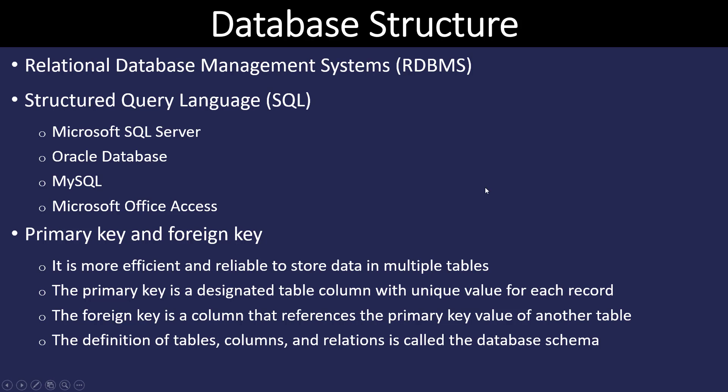One of the key features of a relational database is the primary and foreign key. Each record in a table has to be unique, and we need a unique identifier to find records in the table. That unique identifier is going to be a primary key. And when we have a second table that accesses the first table, the primary key in table A becomes the foreign key in table B.